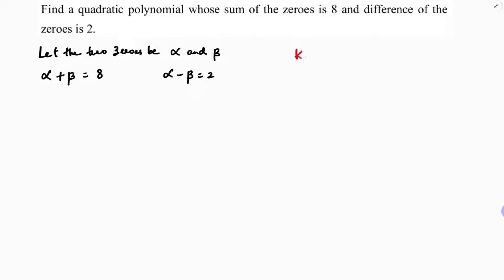For finding a quadratic polynomial, the formula is k times x square minus alpha plus beta into x plus alpha beta. You already have alpha plus beta. You need alpha into beta. So I will solve these two equations to get the values of alpha and beta, then find alpha into beta and substitute it into the formula.